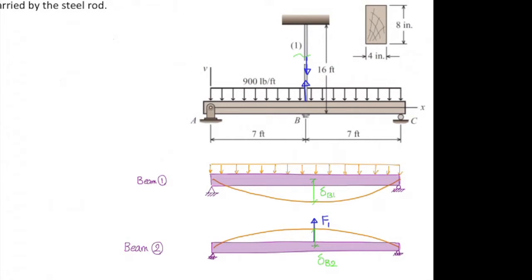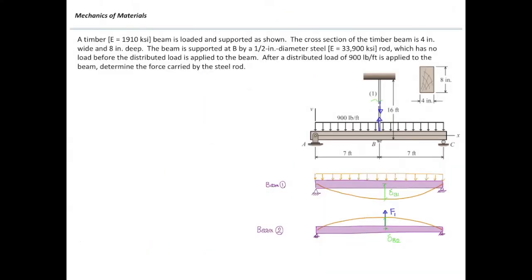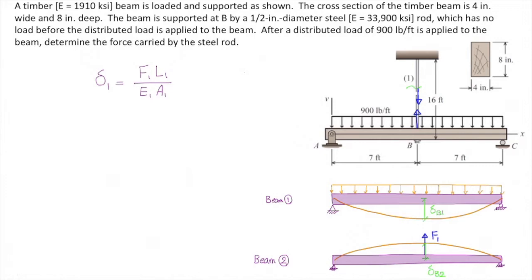How much would be the elongation of a rod? Elongation of a rod would be FL over EA. And here everything is for that steel rod. Now we need to write down the compatibility of deformations. I can say delta B1 minus delta B2 should be equal to delta 1. The only unknown would be F1. You will come up with an equation with unknown of F1. Then you can solve it for F1 and see how much is that. This is what we are looking for.